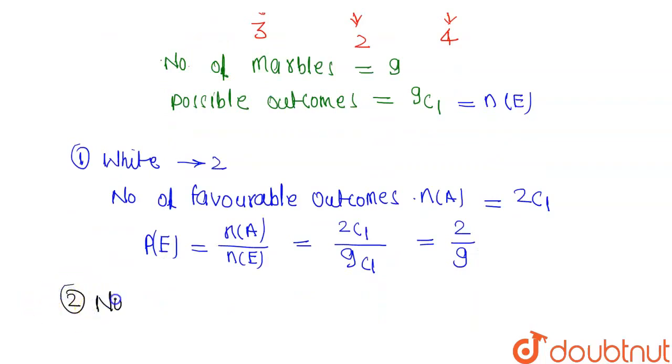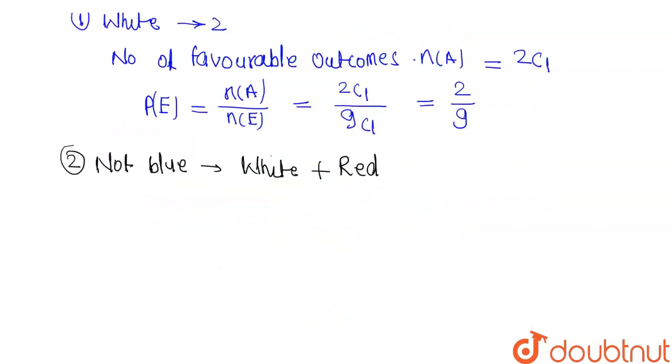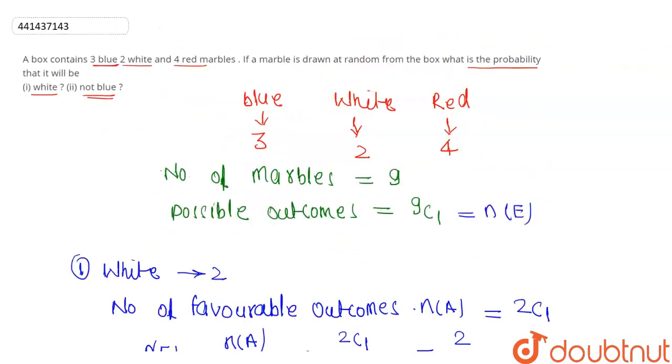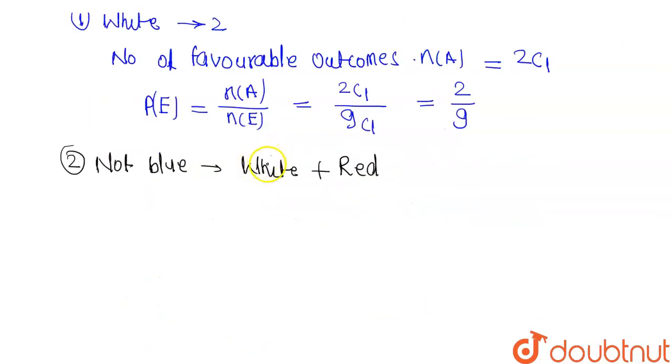Second case: not blue. If it is not blue, it will either be white or red. White means 2, and red means 4. So we have 2 and 4.